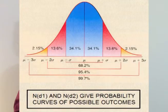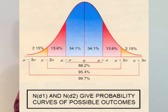Including the risk in pricing an option gives us two unknowns: ND1 and ND2, both of which we solve using probability. In other words, ND1 and ND2 figure out the odds or probability of what will happen.